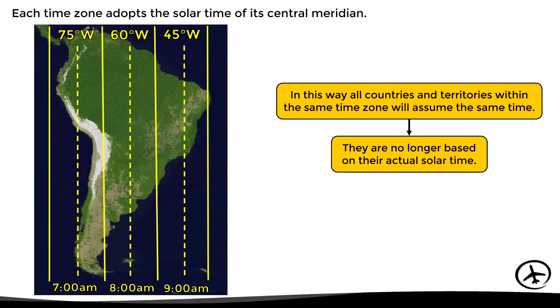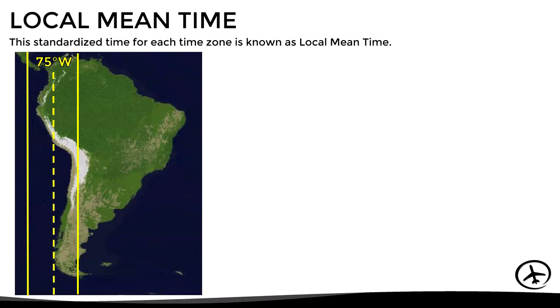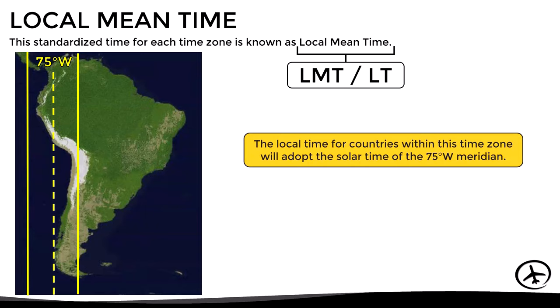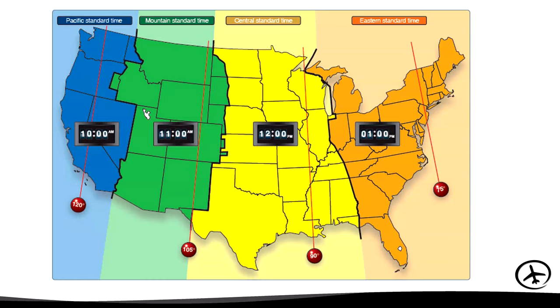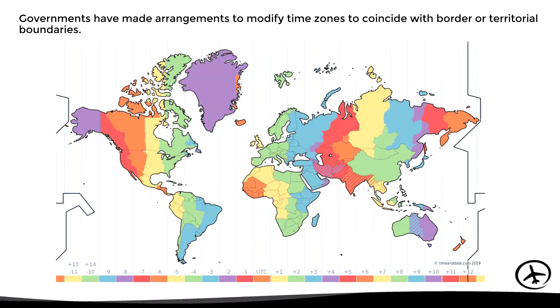This standardized time for each time zone is known as local mean time, usually abbreviated as LMT or LT. Countries within a time zone will adopt the actual solar time of that zone's central meridian. However, some countries are so large that they may span more than one time zone — a clear example being the contiguous United States, which has four time zones. The lines dividing each time zone are not always straight, as they adapt to territorial limits and borders, both in the U.S. and worldwide.